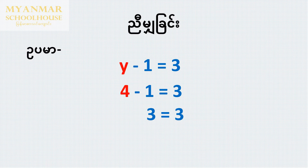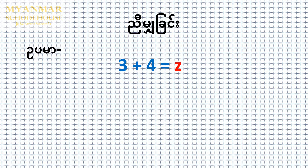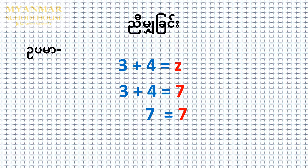3 is equal to 3. The equation is 3 plus 4 is equal to z. The equation gives 7. So 3 plus 4 is equal to 7, and 7 is equal to 7.